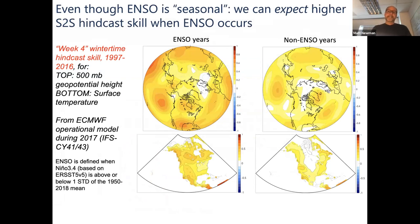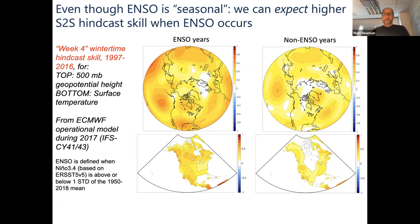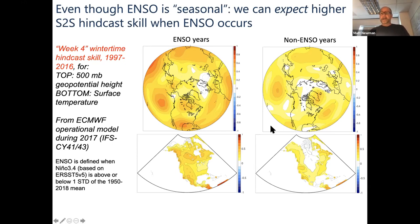Even though we think of ENSO as seasonal, it turns out that we can actually expect higher S2S skill when ENSO occurs. Here's an illustration: this is a week four skill of the IFS, the European operational model as it was operational in 2017, a 20-year hindcast for the winter. Week four skill for geopotential height on the top and surface temperature over North America on the bottom. Two things are pretty clear: most of the skill is during ENSO years — ENSO is the big dog, and when the big dog barks, that's when there's predictability. But there is some skill in non-ENSO years as well.